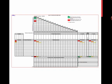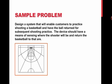This is the overall picture of the House of Quality. It looks a little foreboding, but we just covered every room in the house. Let's quickly look at a sample problem from our textbook: the task was to design a system that would enable customers to practice shooting a basketball and have the ball returned for the next shot. The system would detect where the shooter moved and return the ball to that area so they could fire off the next shot without retrieving it themselves.